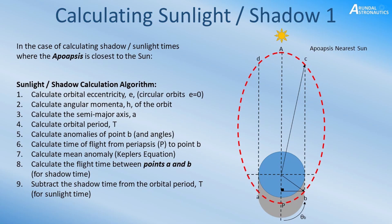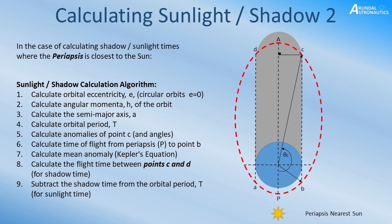This slide and the next slide that's going to come up shortly outlines the algorithm to calculate the sunlight and shadow for both the apoapsis nearer the sun and the periapsis nearest the sun, and I invite you now to pause the video at this stage so you could read through the algorithm in your own time for both slides.